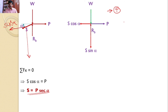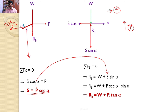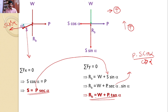Similarly, applying sigma Fy equals zero, with upward direction as positive: RB equals the downward forces W and S sin alpha, so RB equals W plus S sin alpha. Substituting S equals P sec alpha: RB equals W plus P sec alpha times sin alpha, which simplifies to W plus P times sin alpha divided by cos alpha, giving RB equals W plus P tan alpha. Hence, these two are the answers for the given problem.